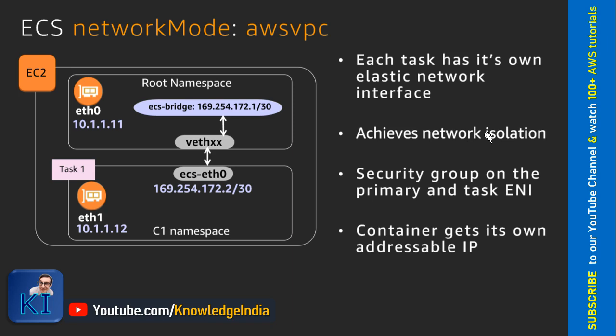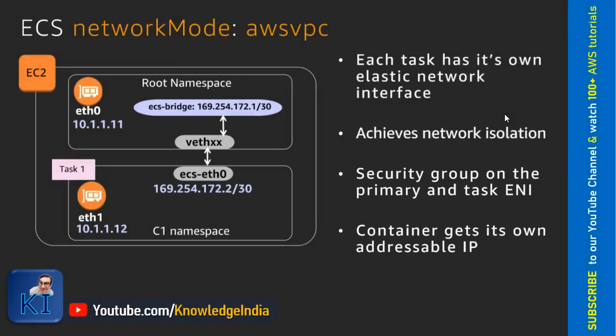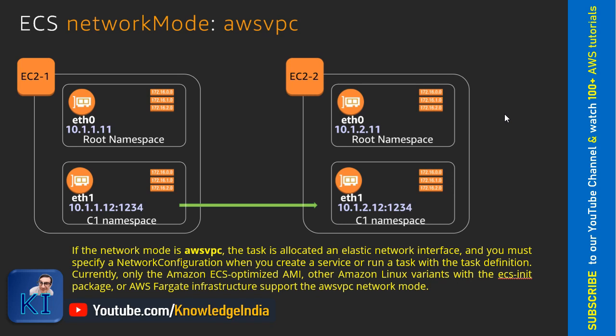AWS VPC mode is compliant with the latest CNCF guidelines — specifically the CNI (Container Networking Interface). In simple terms, each and every container gets an ENI attached. With an ENI you get a private IP address, and security groups get attached at the ENI level. So in AWS VPC mode, each container will get its own IP address and its own security group.